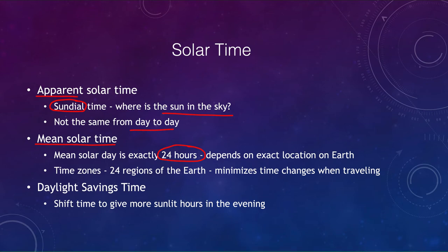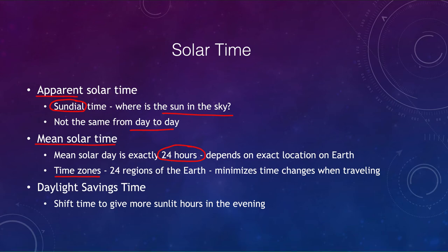We also divide the earth into time zones. As you travel west you set your clocks backward; moving east you set them forward. Time zones minimize the amount of change needed when traveling, because apparent solar time would otherwise differ between cities even relatively close together. We average together so that much of the eastern United States — whether in New York or Detroit — uses eastern time, and it's not until you travel further west to Chicago that the time shifts back an hour.